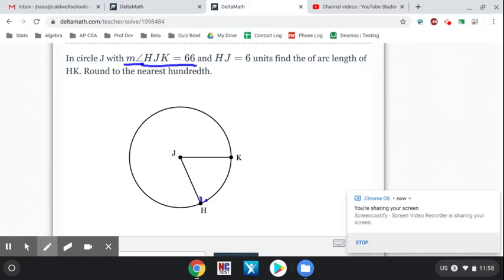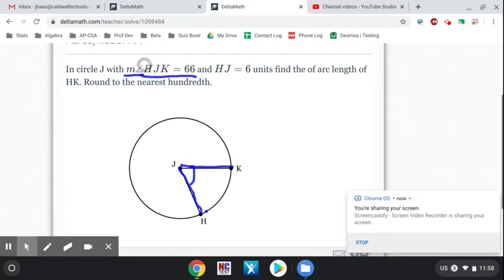Find point H, trace it to point J, then to point K. So this is talking about this angle right here. Anytime you see that m∠ symbol, that's the angle it's looking for. That measure is 66 degrees on the inside.